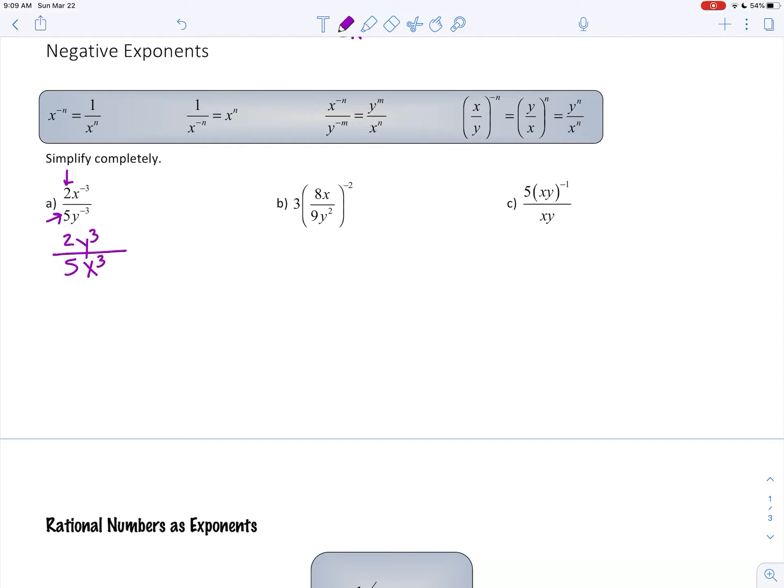On this next example, I'm seeing a negative 2 on the outside of the parentheses. I can just flip the fraction, and that will make it into a positive 2. And then I can square everything inside of the fraction. 81, y to the 4th, 64, x squared. And to get rid of the parentheses, I need to multiply by 3.